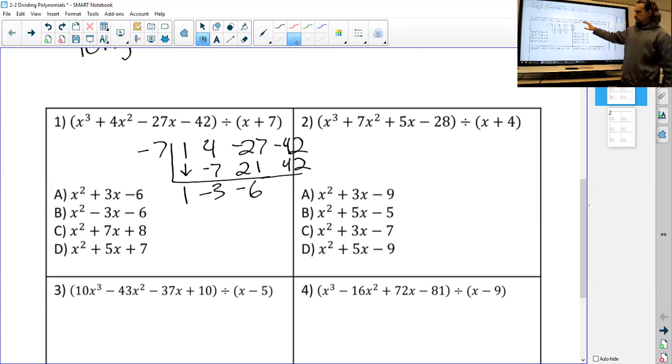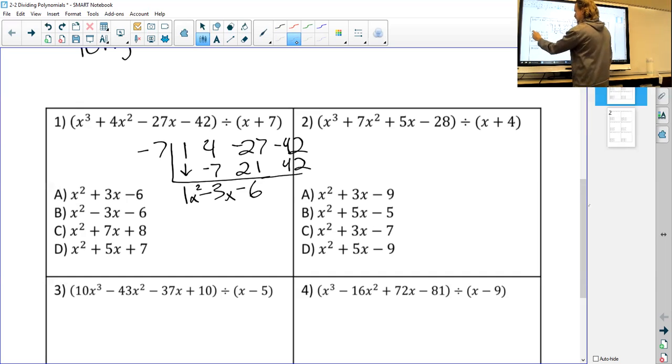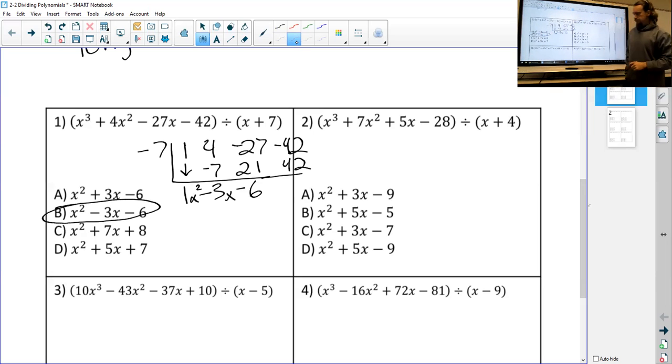Then I just got to put my exponents back. Since I started with x to the third, I know my answer is going to start with x squared, and then this is going to be x, and then 6 is just a constant. So my answer should be 1x squared minus 3x minus 6, or simply x squared minus 3x minus 6. Once you get the hang of it, it's always the same steps every time: bring it down, multiply, add them together. If you do that correctly, you have no remainder at the end and you've got the right answer.